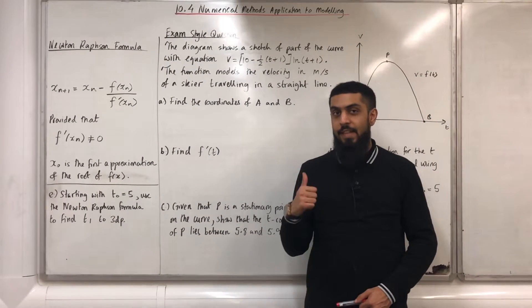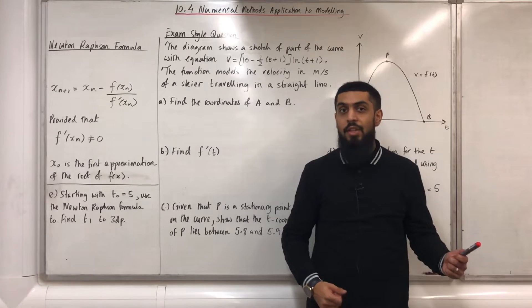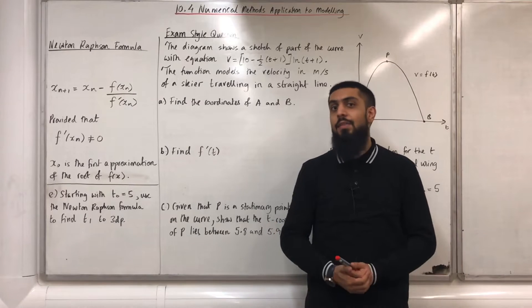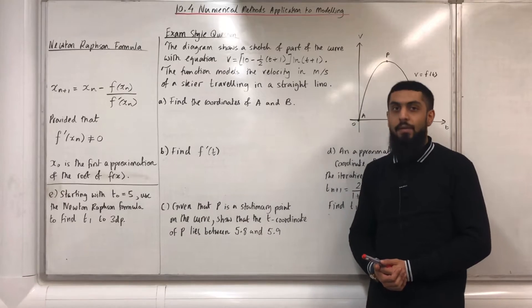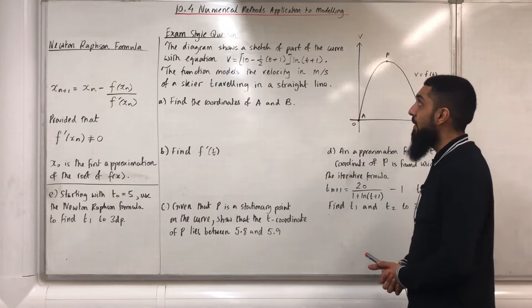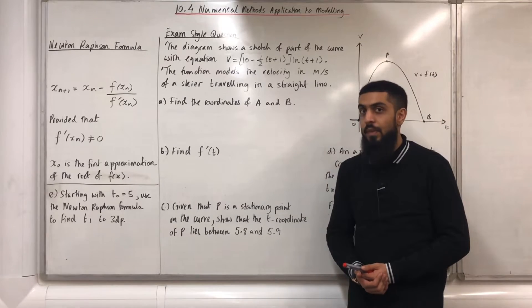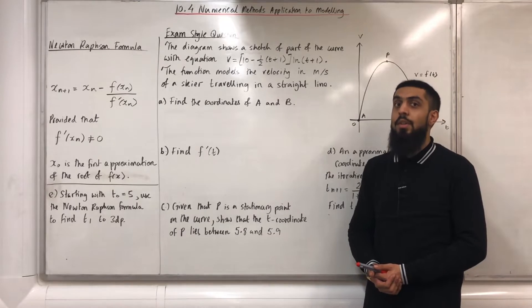Welcome back. Before I start this particular section, the numerical methods that I've covered in this chapter are Iteration and Newton-Raphson formula. Iteration and Newton-Raphson formula is used to approximate the root of f(x). In this video, I'll be looking at 10.4 Numerical Methods Application to Modeling. 10.4 represents Chapter 10, Section 4 of the Pearson A-Level Math Pure Math Year 2 textbook.